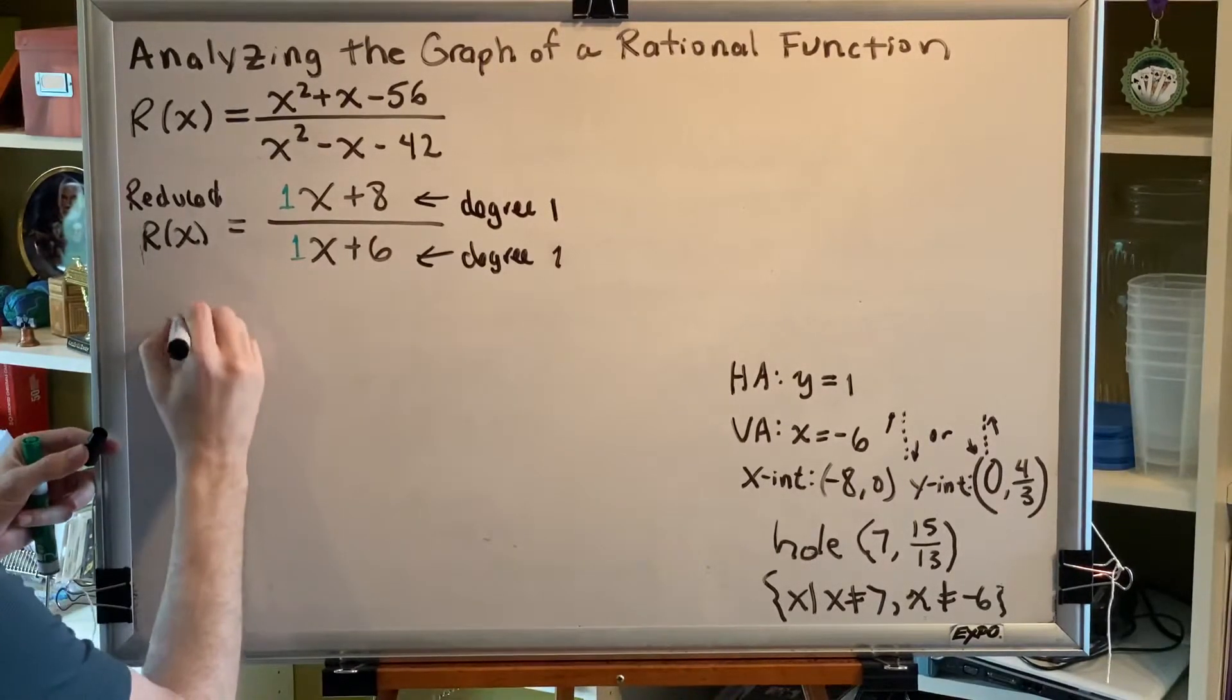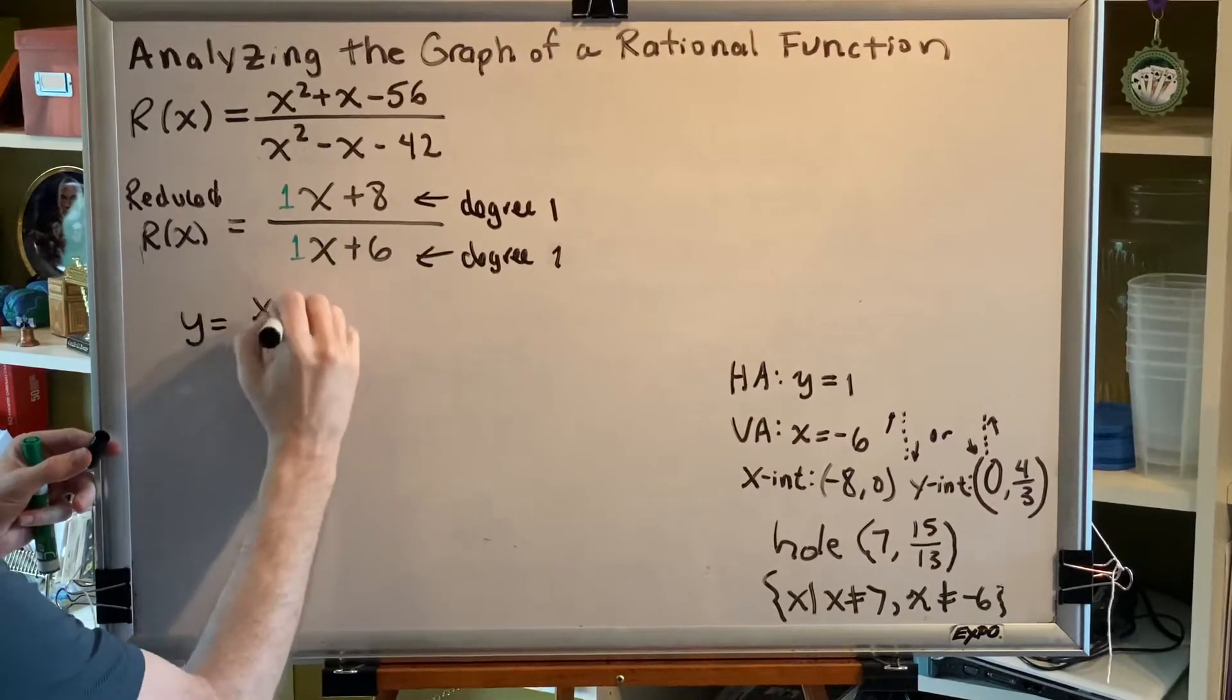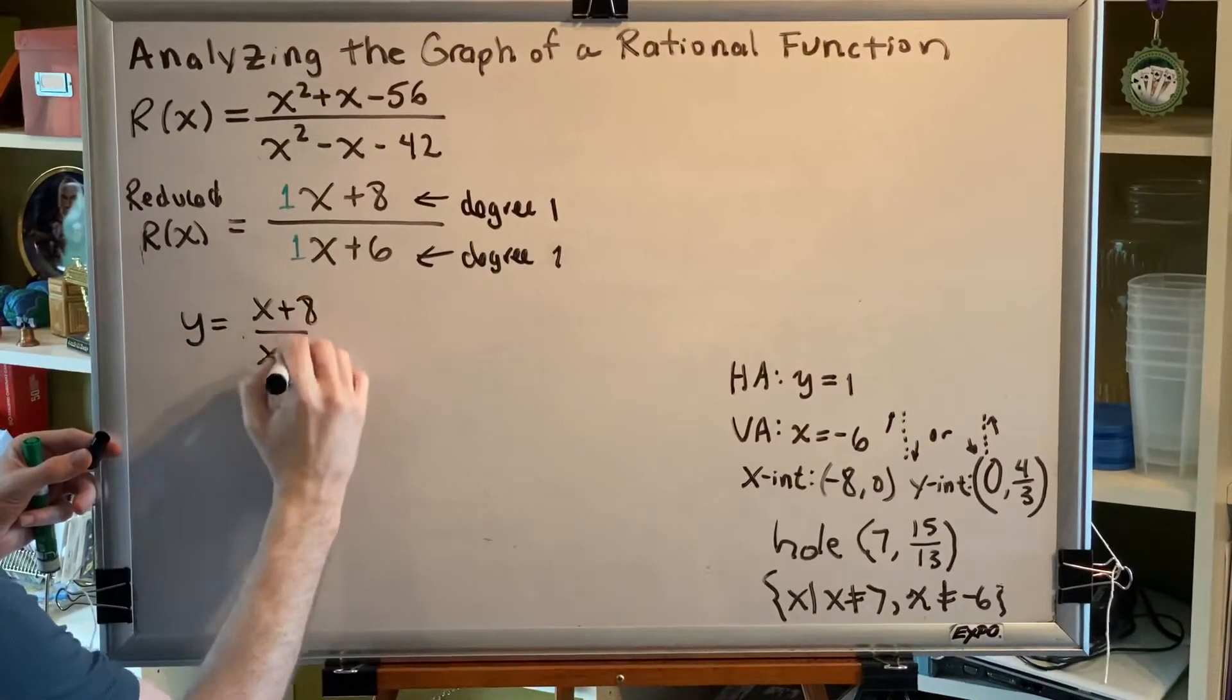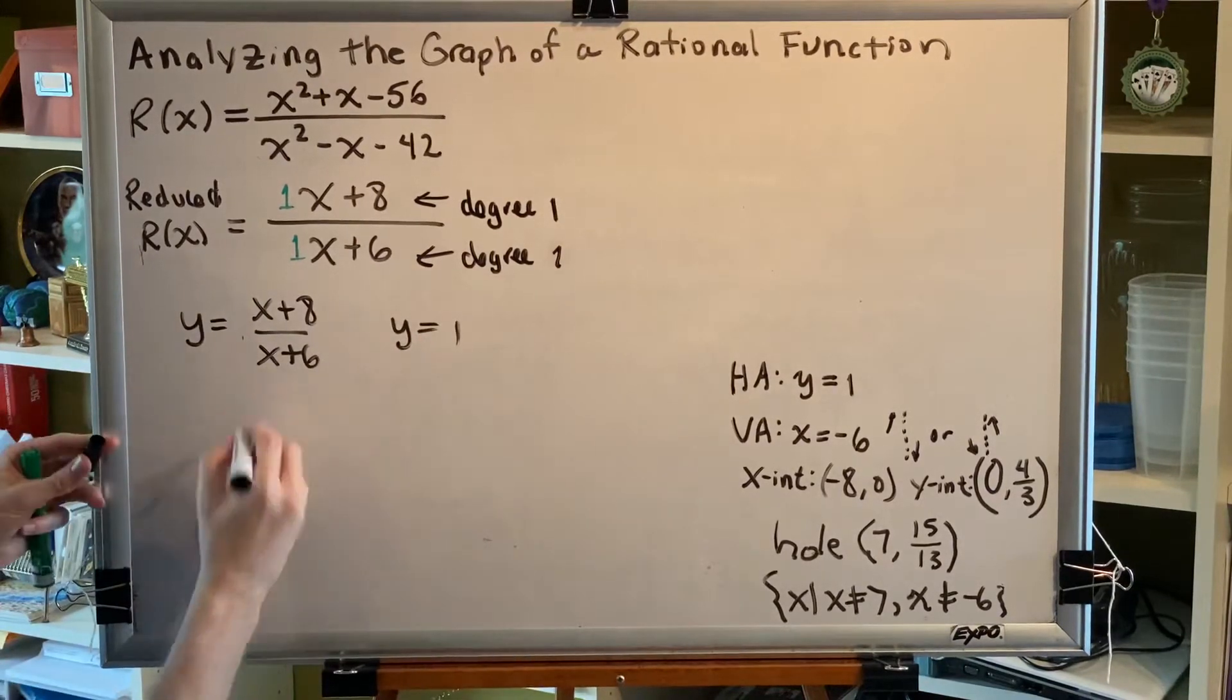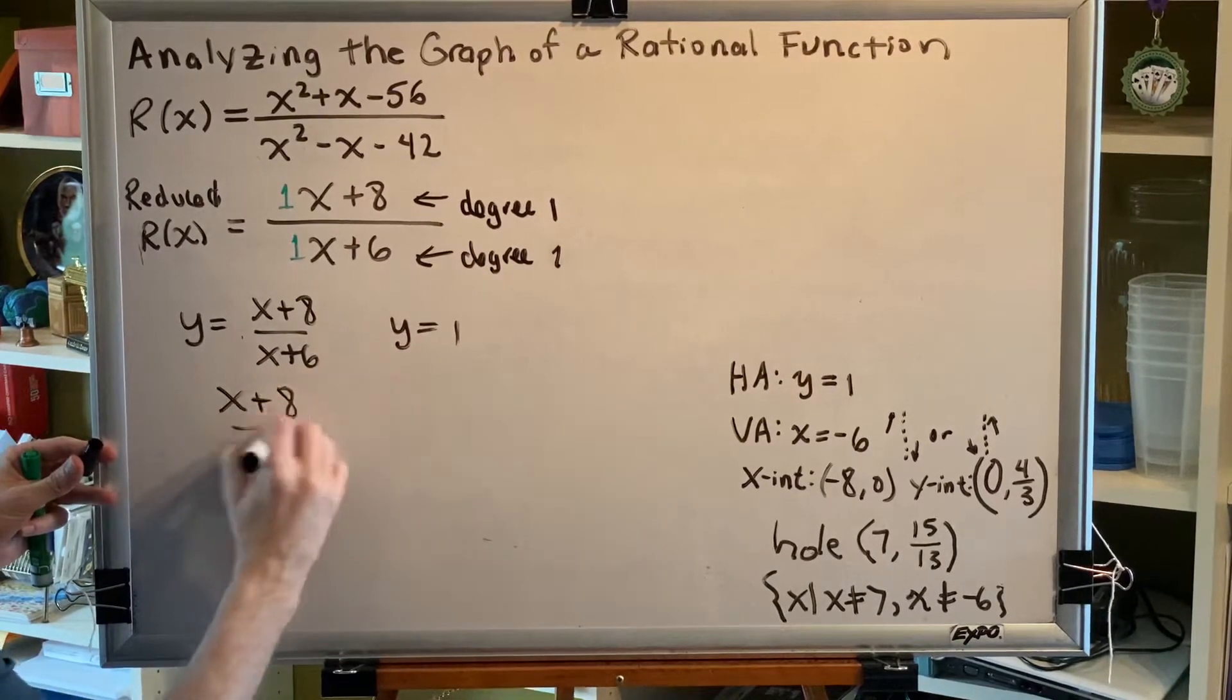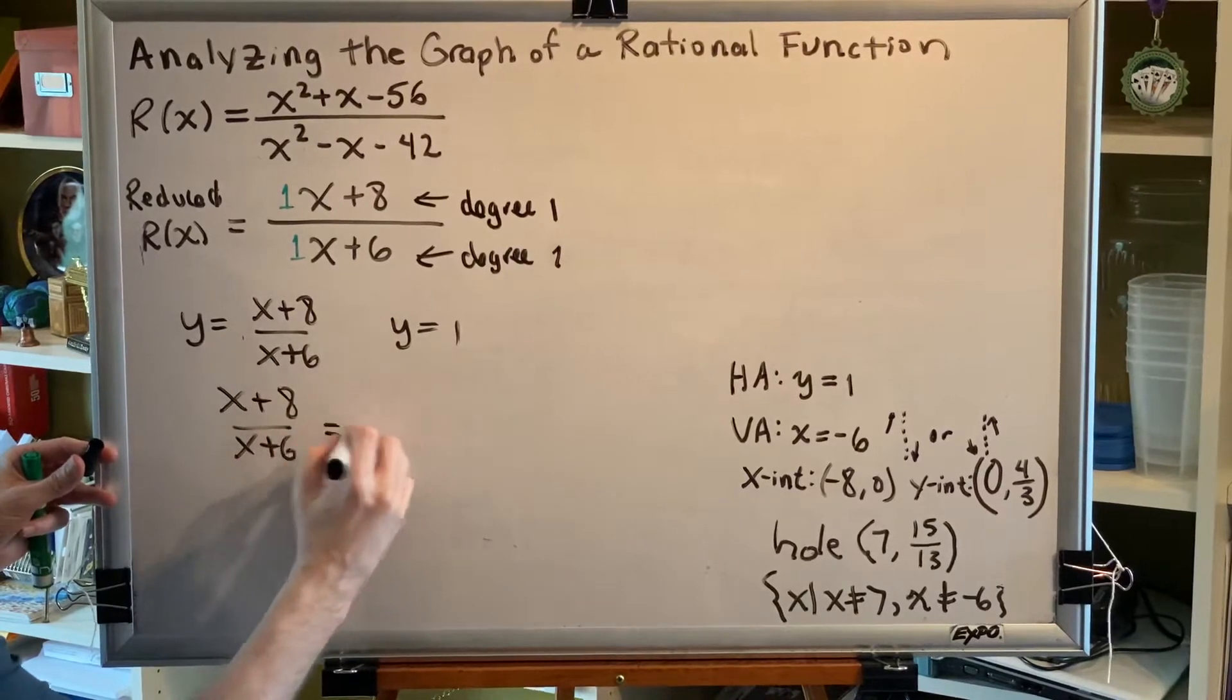So our reduced r of x is y equals x plus 8 over x plus 6. The horizontal asymptote we found was y equals 1. Set these equal to each other. x plus 8 over x plus 6 equals 1.